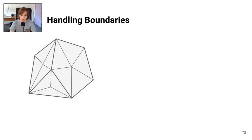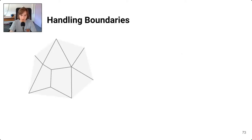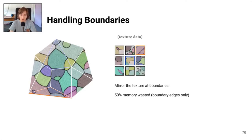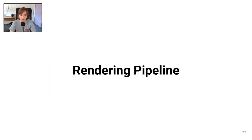For meshes with boundaries, the triangulation step is unchanged. For the quadrangulation, interior edges map to quads and boundary edges map to triangles. We texture the model by associating one texture with each quad or triangle. To avoid filtering artifacts we mirror the textures for boundary edges, which wastes 50% of memory for those edges, but since they are a small minority, in practice it is negligible.